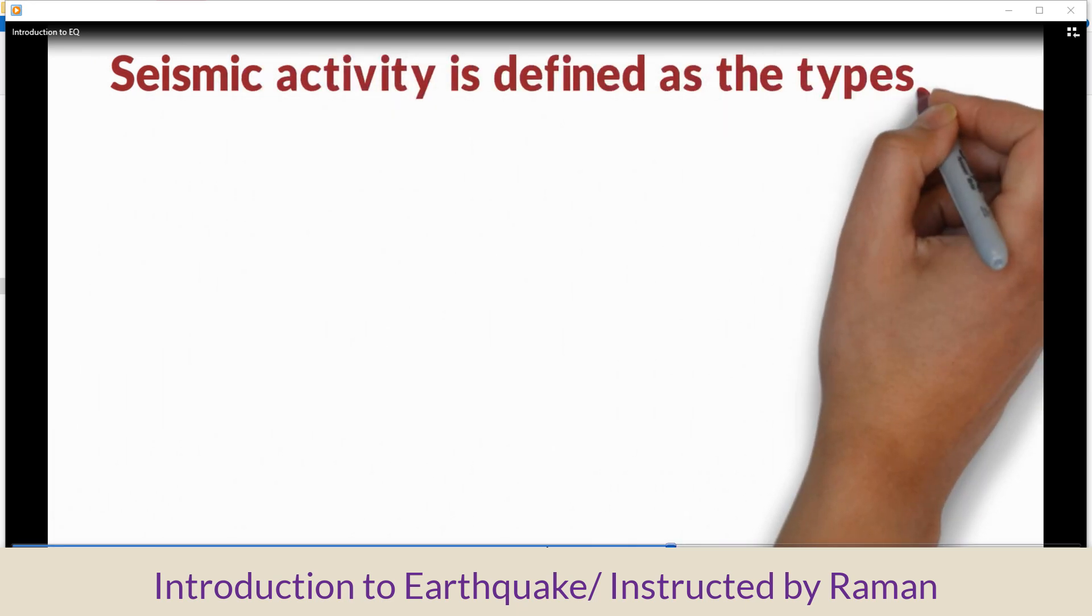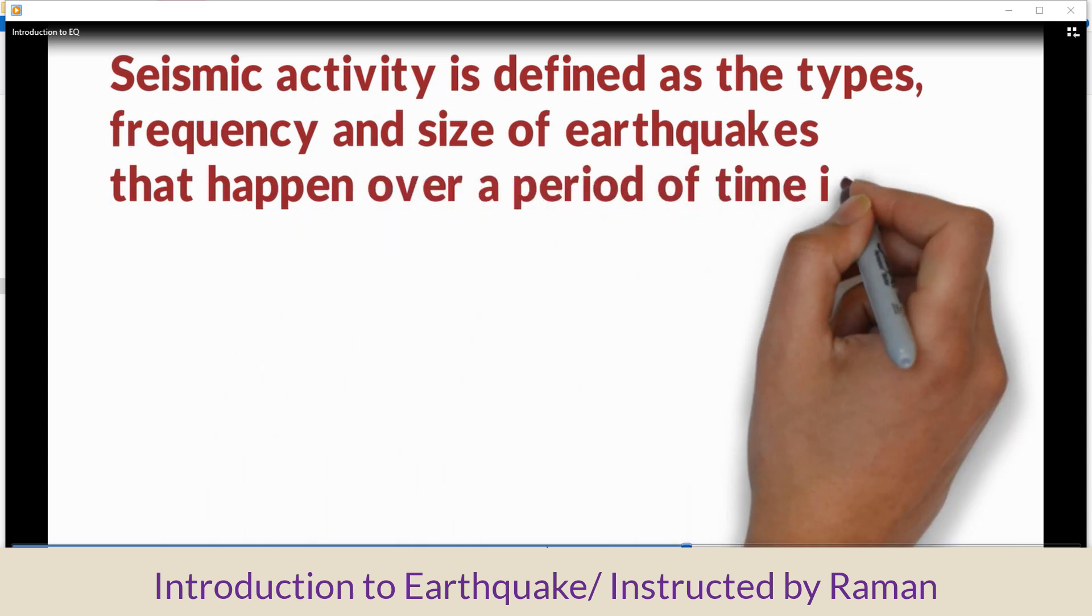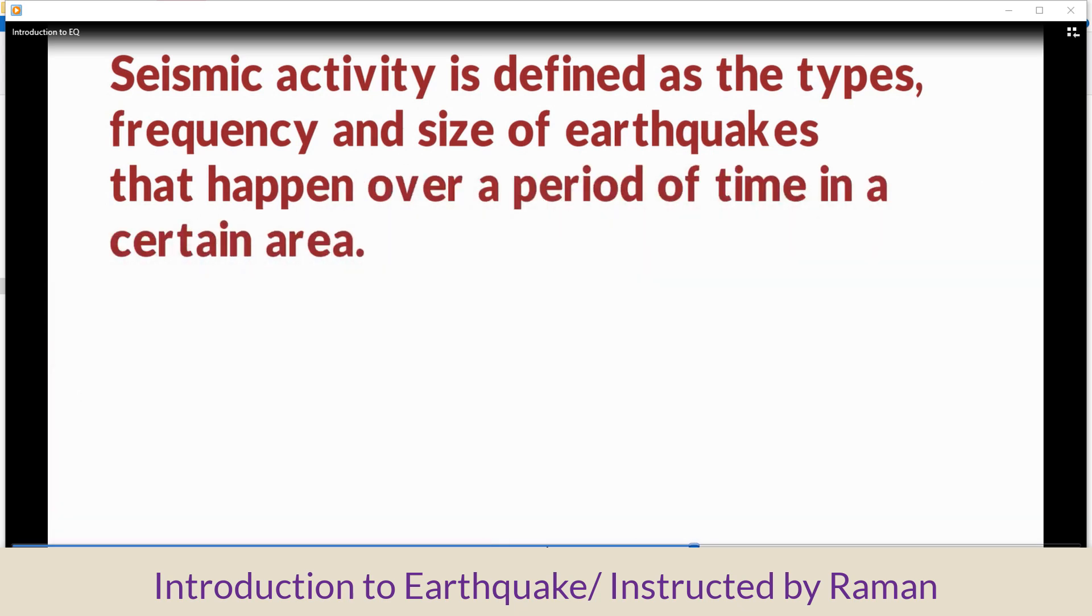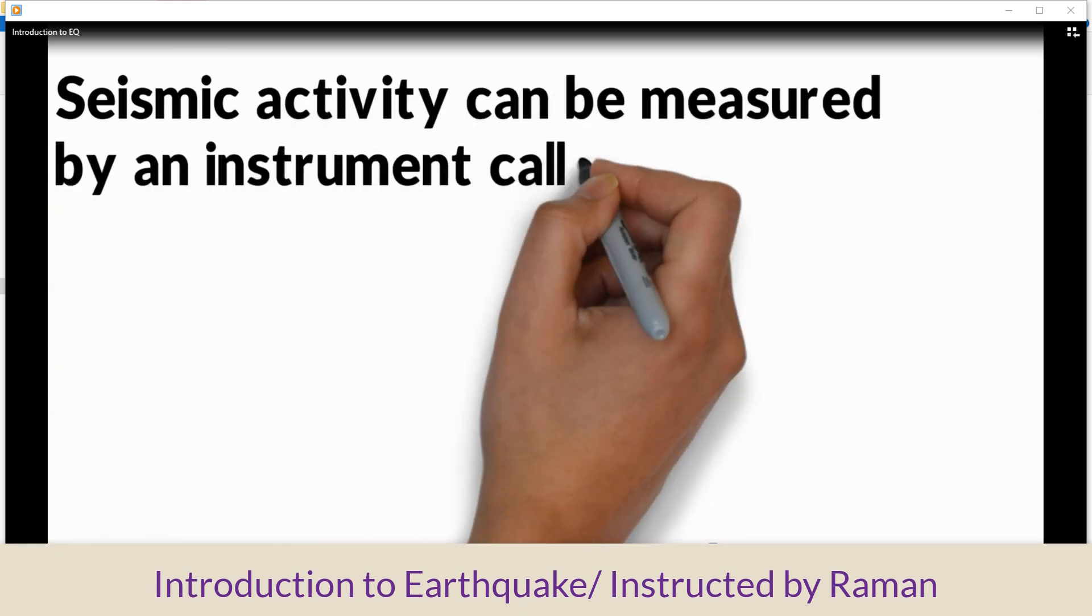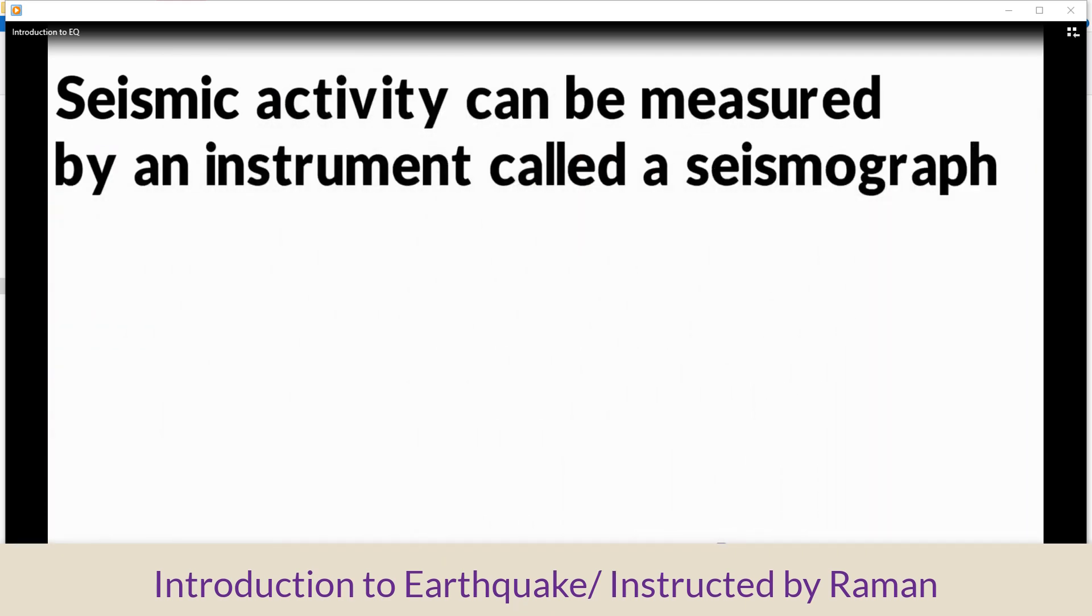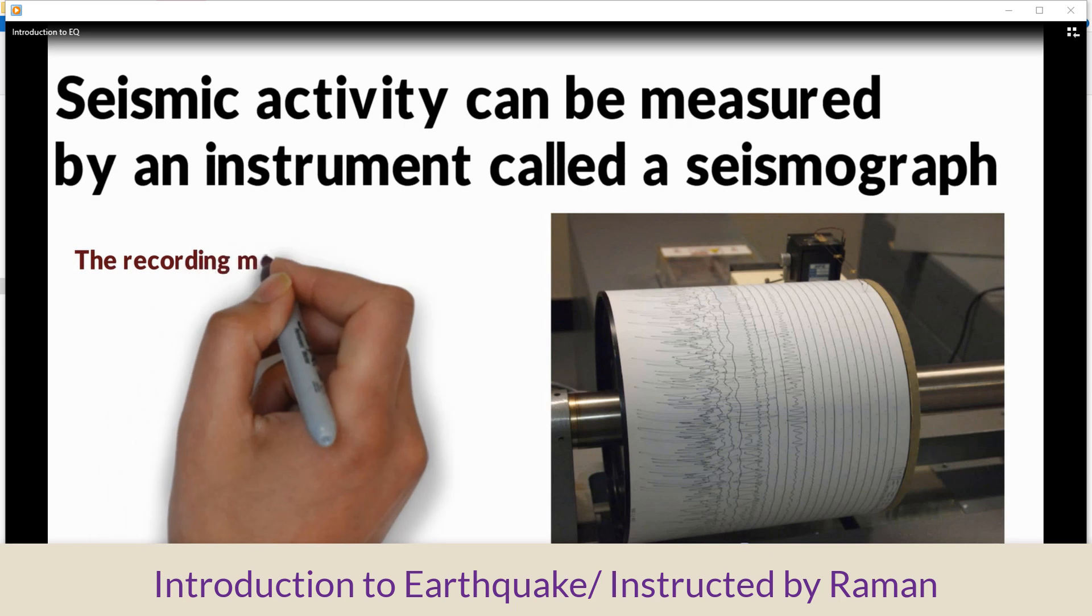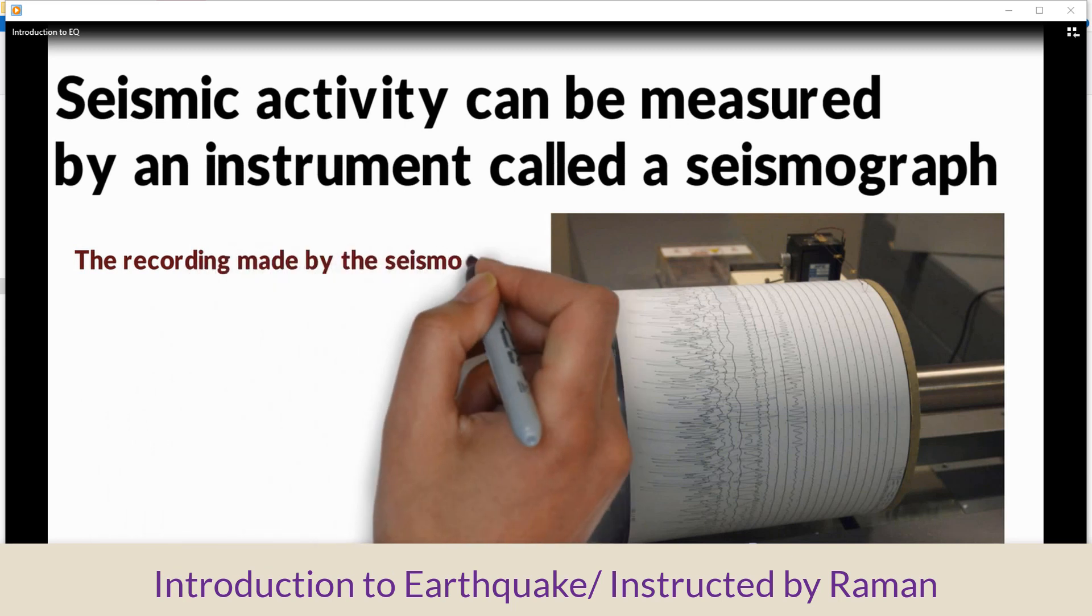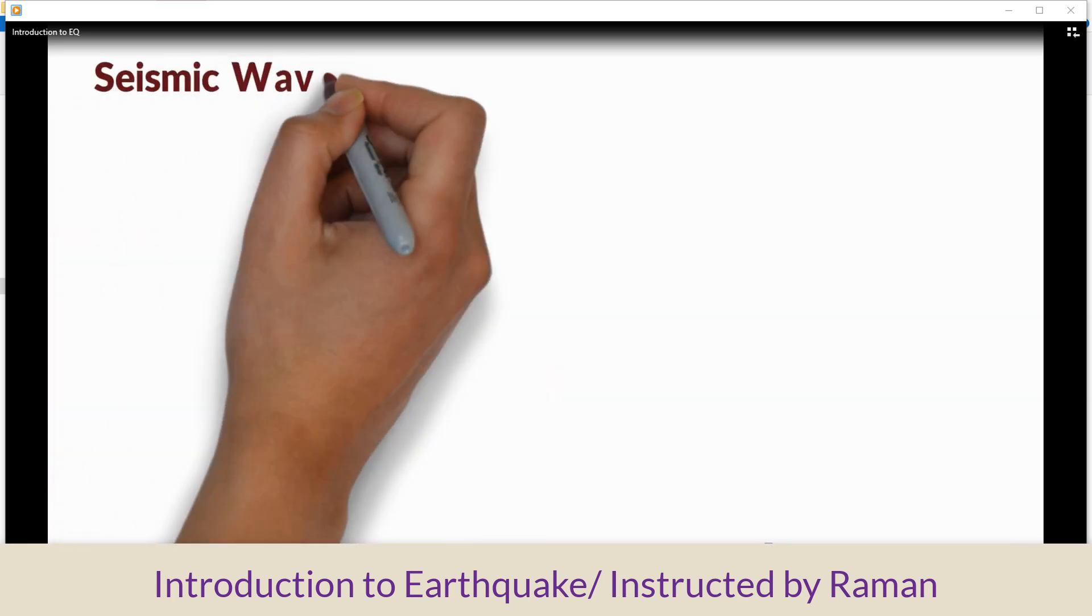Seismic activity is defined as the types, frequency, and size of earthquakes that happen over a period of time in a certain area. Seismic activity can be measured by an instrument called a seismograph. The recording made by the seismograph is called a seismogram.